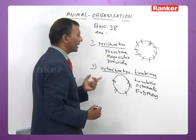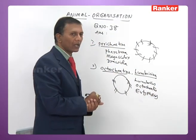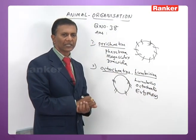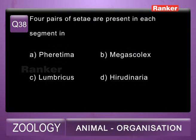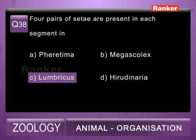In all three of them you find octochaetine arrangement. The question asks about four pairs of setae in each segment — the correct answer for the 38th question is C, Lumbricus.